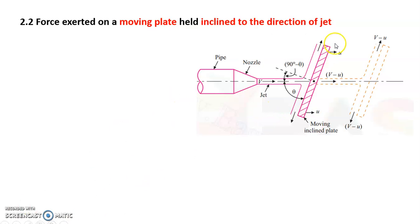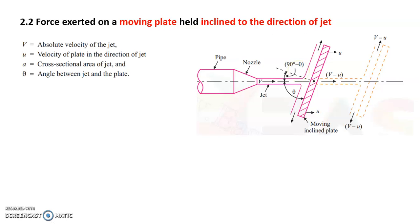In this second case, there is a plate which is inclined at angle theta, and this plate is moving with velocity u while the jet moves with absolute velocity V. As we solved the stationary case, we construct a normal plane and first calculate Fn, the normal force, then resolve it. Fx is Fn sine theta and Fy is Fn cos theta. Here, v is the absolute velocity of the jet, u is the velocity of the plate in the direction of the jet, a is the cross-sectional area of the jet, and theta is the angle between the jet axis and the plate.